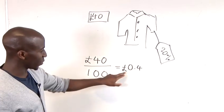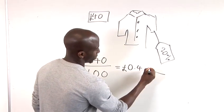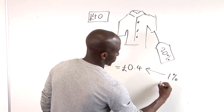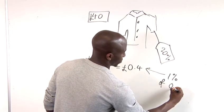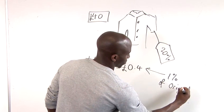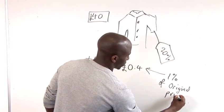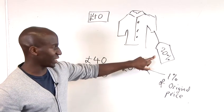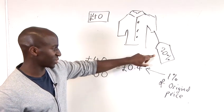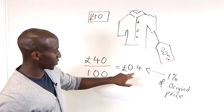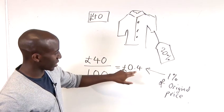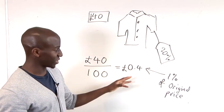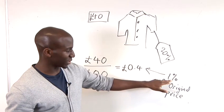Now, what we want to do, now we have 1% of the original price. We want to find out how that relates to a percentage change of 20%. So, what we will need to do is multiply this, which is 1% of the original price, by 20. And that will give us 20%.